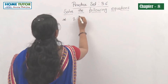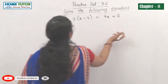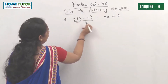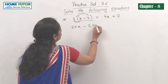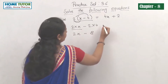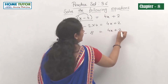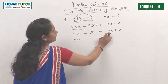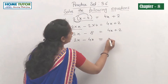Next equation: 2 into bracket (x minus 4) equals 4x plus 2. We have to find the value of x. First, open the bracket by distributing: 2 multiplied by x minus 2 multiplied by 4 equals 4x plus 2. So 2x minus 8 equals 4x plus 2. Now take the like terms together: 2x minus 4x equals 2.